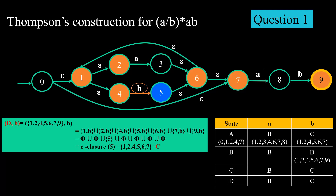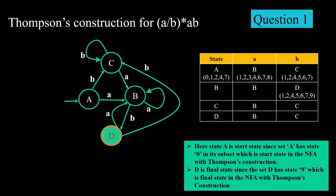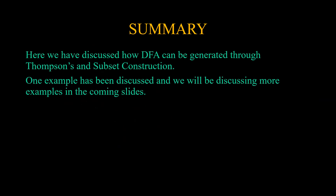We have completed the subset construction. The DFA is shown in the transition table on the right side. We have four states: A, B, C, and D. State A is the start state because set A contains state 0, which was the start state in the original NFA. The final state is D because the original Thompson's construction had state 9 as the final state, and only set D contains state 9. This is the final DFA. In summary, we have discussed how a DFA can be generated through Thompson's construction and subset construction, with one complete example covered.